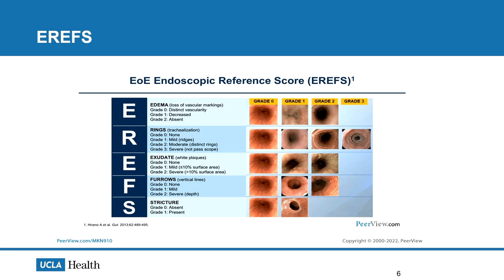The EREFS scoring system is very useful, and I encourage all gastroenterologists to use it in their reporting for evaluating and monitoring EOE patients over serial endoscopies. The first E identifies edema - the loss of vascular markings. Rings represent trachealization and is the only parameter with four grades. Exudates are white plaques covering less than or more than 10% of esophageal surface area. F represents furrows, which are vertical lines. Strictures may be absent or present, though we are generally poor at detecting subtle strictures in EOE.